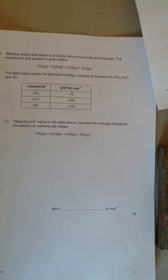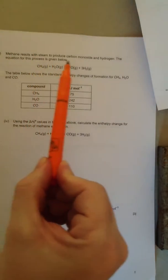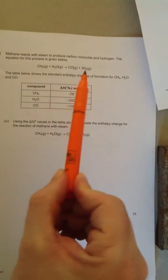So this looks at two different types of energy calculations. The first question says methane reacts with steam to produce carbon monoxide and hydrogen. The equation is given below.